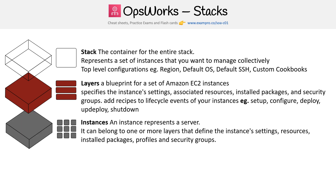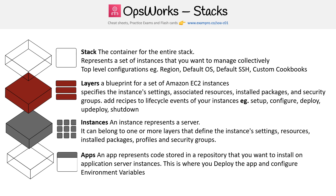Then you have the instances themselves. This represents the server — it can belong to one or more layers that define the instance settings, resources, installed packages, profiles, and security groups. Then you have the app itself. The app represents code stored in a repository that you want to install on your application server instances. This is where you deploy the app and configure environment variables and other app-specific configurations.